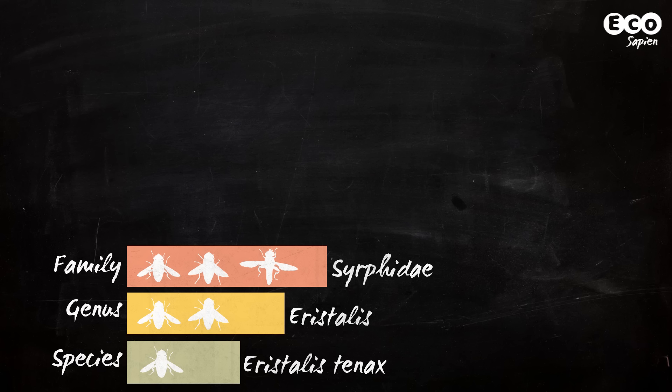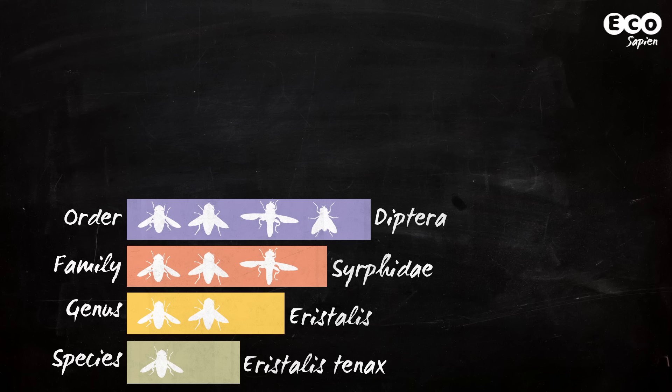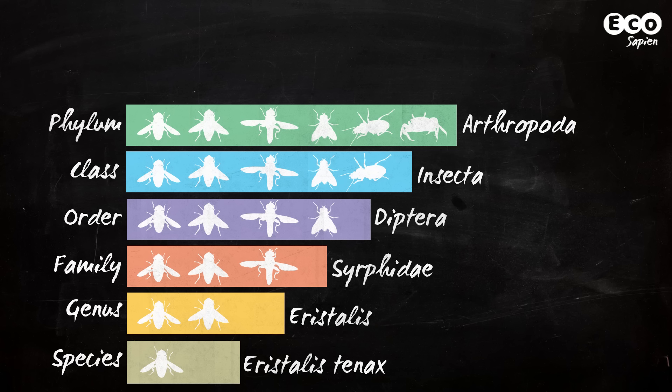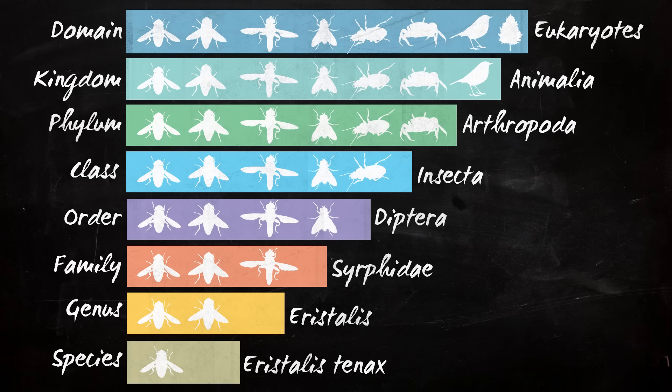Hoverflies belong to the order Diptera, the true flies. Flies are insects, and insects are part of the phylum Arthropoda — animals with an external skeleton, segmented body, and appendages, like crustaceans, arachnids, and centipedes. Ultimately, the dronefly is part of the animal kingdom, and is a eukaryote, an organism whose cells contain a nucleus.